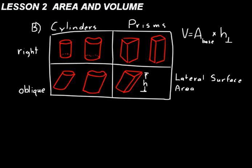That's how you find the volume of a cylinder or prism: area of its base times the height perpendicular to the base. Now, before we talk about lateral surface area, one important thing: the units for volume are length cubed — whether centimeters cubed, inches cubed, whatever. Area is always length squared; volume is length cubed.